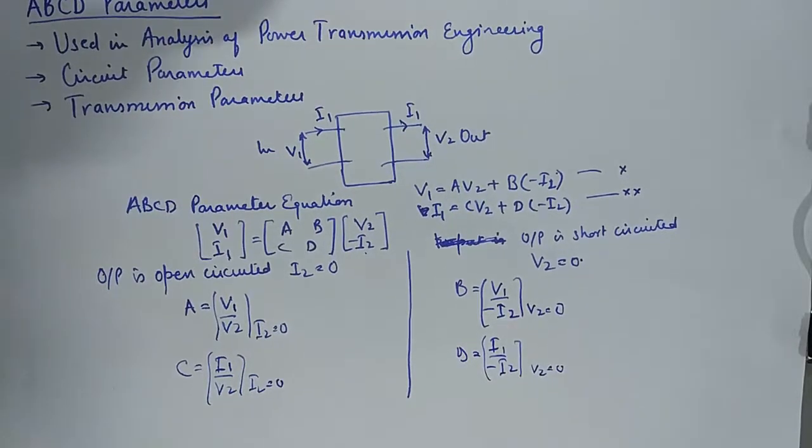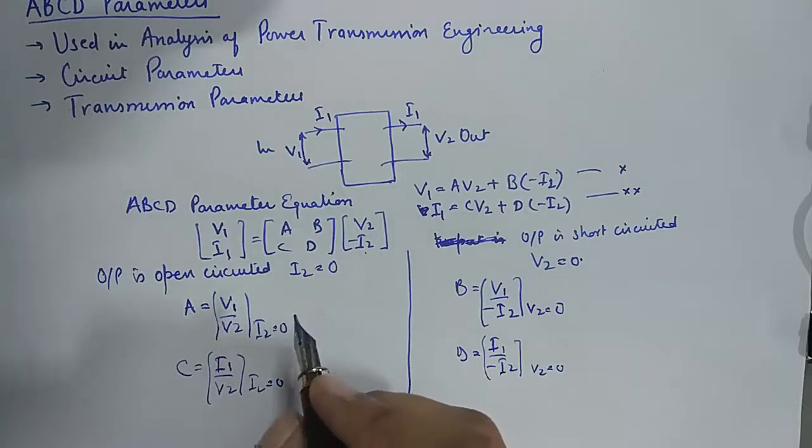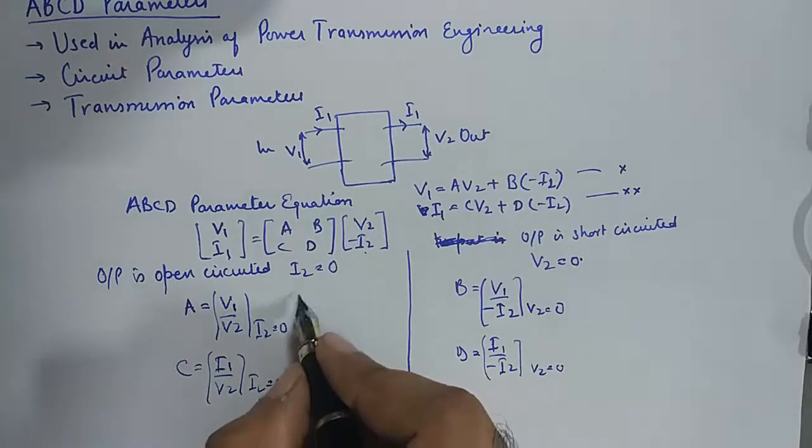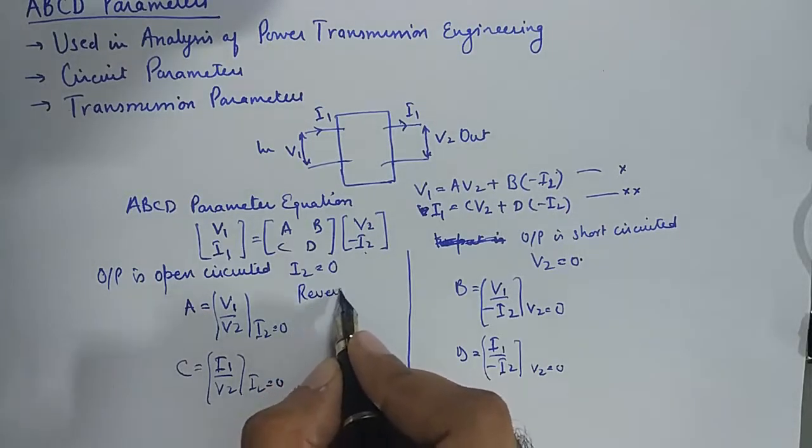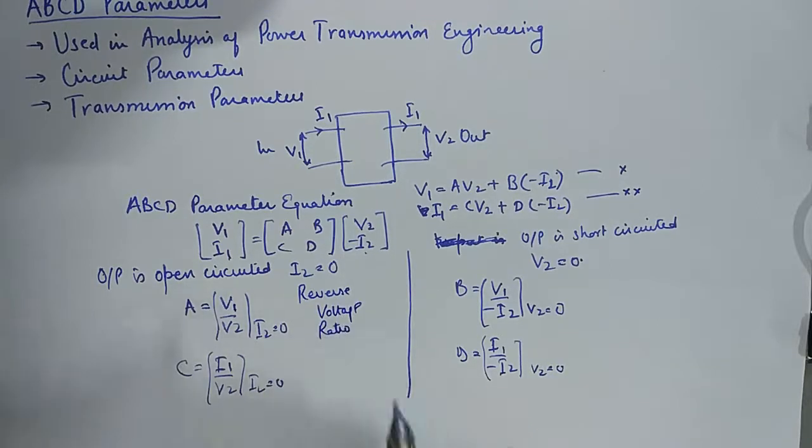Now we need to see the nomenclature associated with these parameters. A is a ratio of two voltages and it's known as reverse voltage ratio, and needless to mention here, it's going to be a dimensionless quantity.